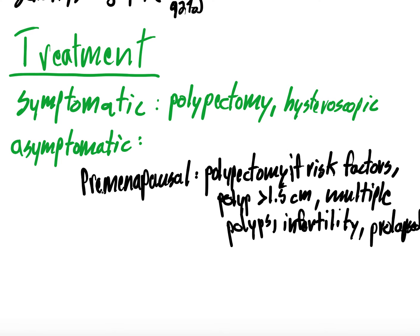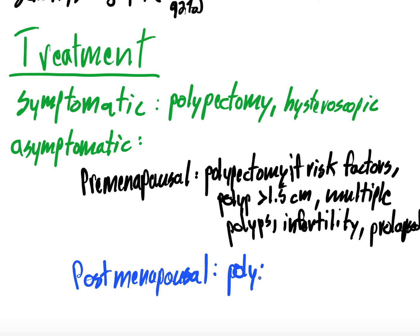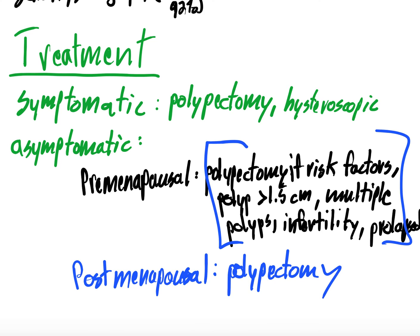If you are postmenopausal, the answer is simple — you just do the polypectomy. So in summary: if premenopausal, there's more decision-making based on risk factors, size, number, fertility issues, or prolapse. If postmenopausal or symptomatic, do the polypectomy. The only patient you don't do a polypectomy on is a premenopausal patient who doesn't fit any of those criteria. Note that the literature is not very supportive of polypectomy improving fertility, so it's worth letting patients know this might not fix the problem, but it is still recommended.